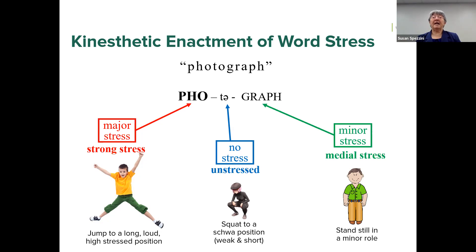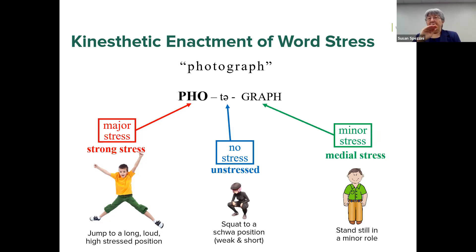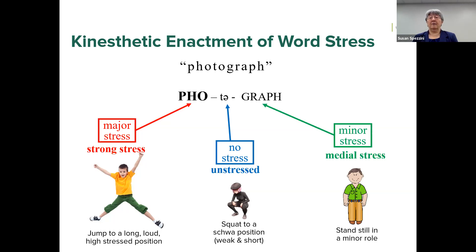For the unstressed second syllable we squat down — I'll almost disappear off screen — to a schwa position. That figure in dark gray on screen has a body shape that almost represents the schwa symbol from the IPA fonts. The third syllable has minor stress — like having a minor role in a film — so we just stand there: not loud, not disappearing, just present. Major stress has the major role in a play; minor stress has the minor role; schwa kind of disappears and gets out of the way.